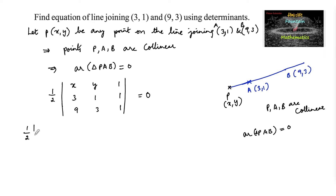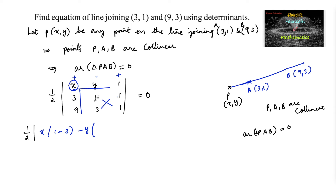Expanding along the first row using the plus-minus-plus sign rule: x times the minor determinant (deleting row 1, column 1) gives |1 1; 3 1| = 1×1 − 1×3 = −2. Minus y times |3 1; 9 1| = 3×1 − 9×1 = −6. Plus 1 times the next minor.